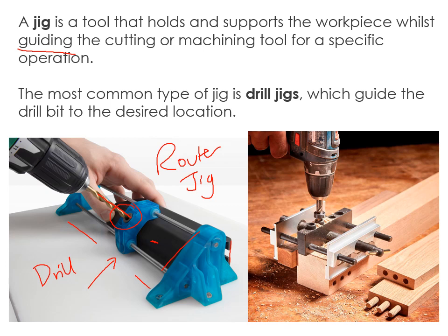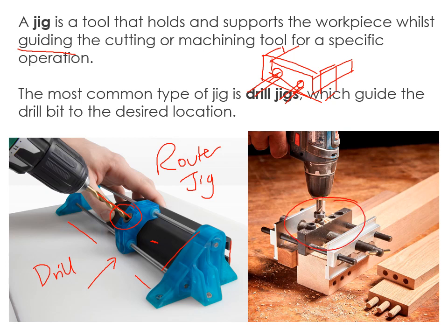A really common use for jigs is dowel joints. You might have a jig that fits on the front of a piece of material with two holes to guide where the drill goes in. You can take the jig off, put it on another piece, and drill two more holes that line up perfectly — which is exactly what's shown in the example here.